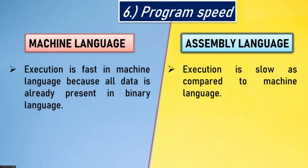Sixth point — program speed. Machine language execution is fast because all data is already present in binary form. In assembly language, execution is slow as compared to machine language.